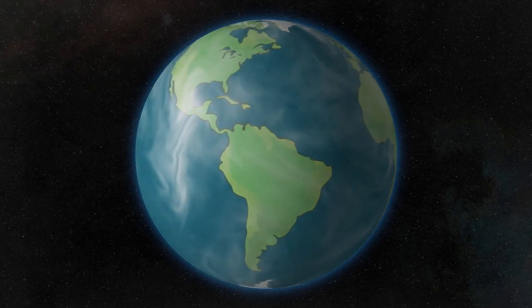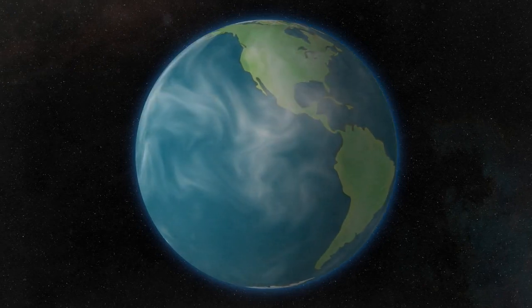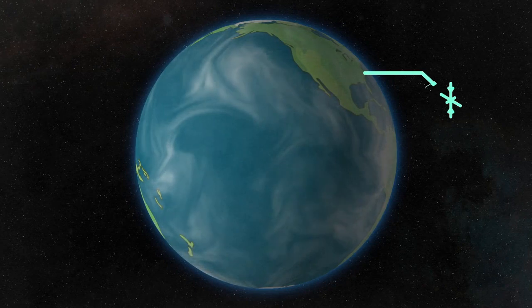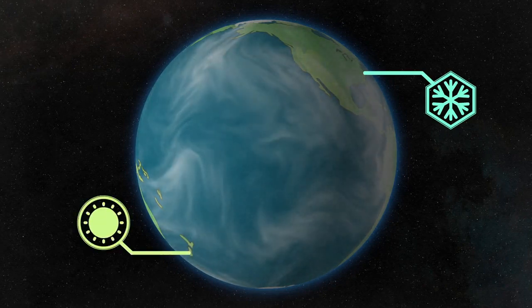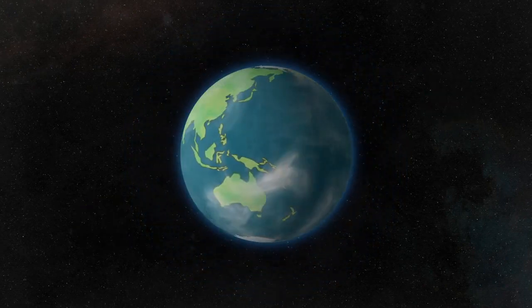Still not convinced? How about this? Summer and winter occur simultaneously on the surface of our planet. When it's winter in Connecticut, it's summer in New Zealand. So if it's not the distance from the Sun, what else could it be?